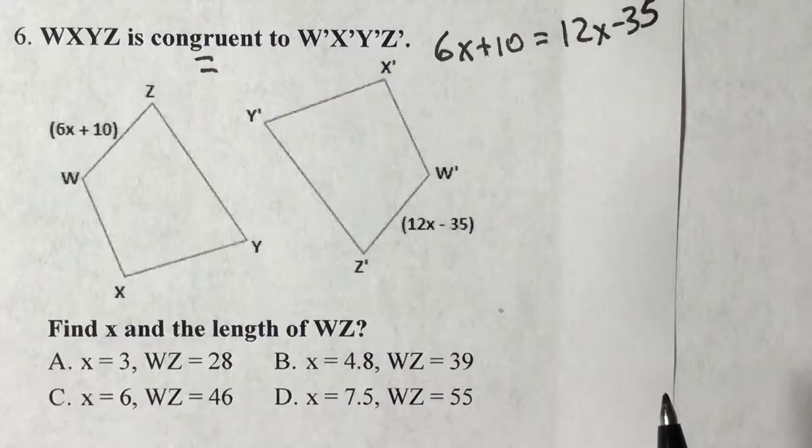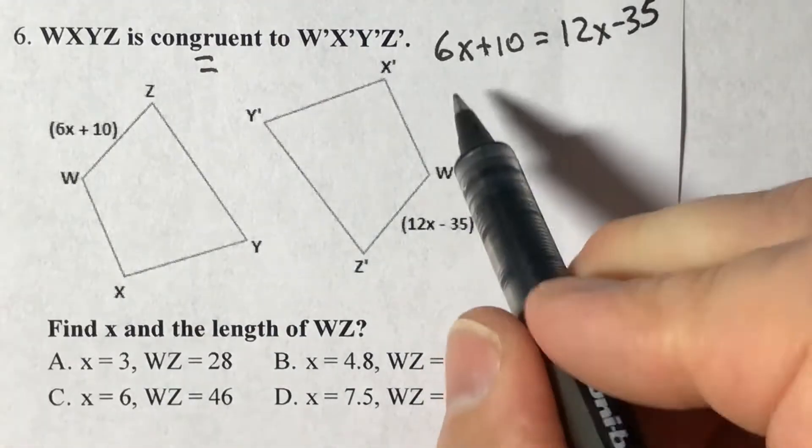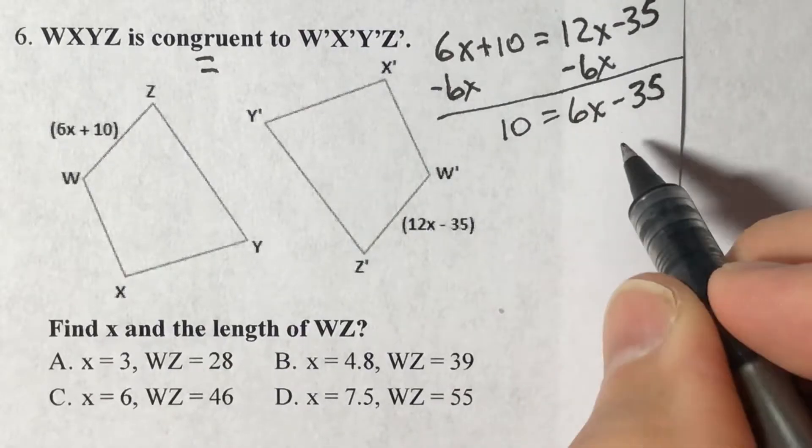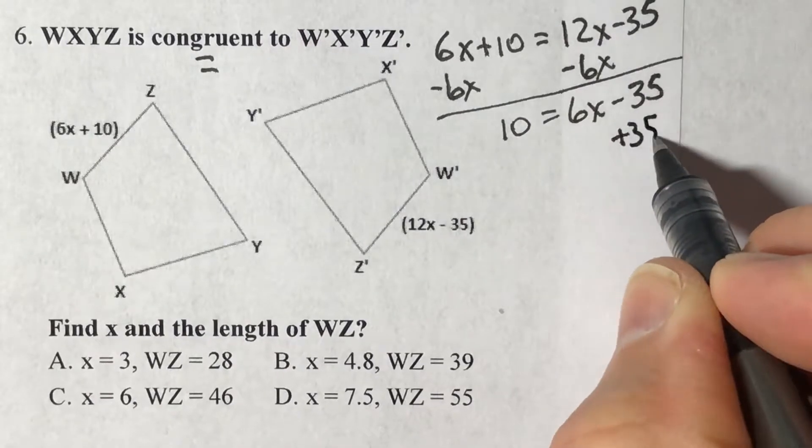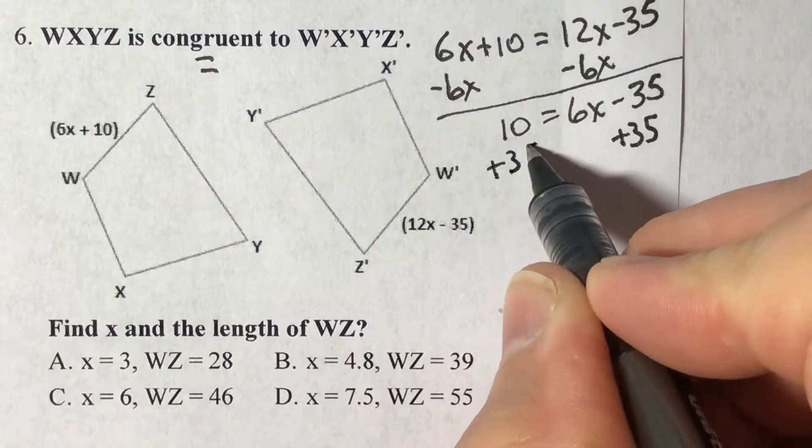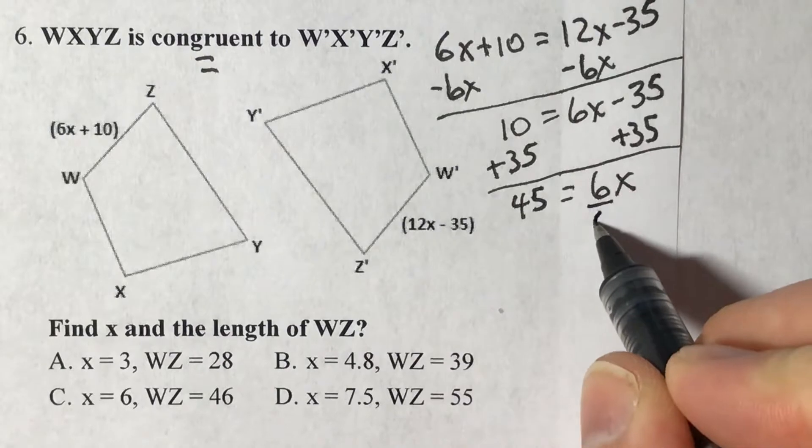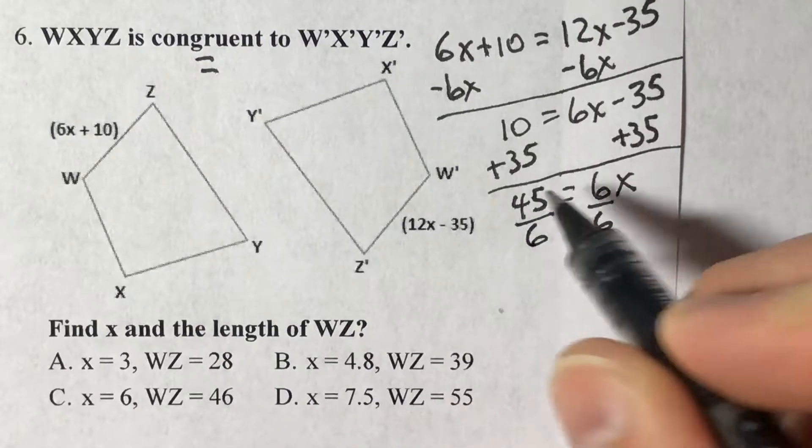Subtract 6X from both sides, move this over. Plus 35, plus 35. So 6X equals 45.